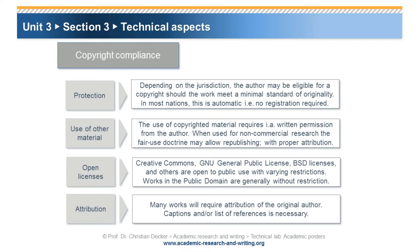It is important to take note of open licenses, such as Creative Commons, GNU general public licenses, BSD licenses, and others, which are open to public use with varying restrictions. You can use these images or other material as they are not copyrighted, but they may be subject to some restrictions like an attribution requirement. Works in the public domain are generally without restriction. Many works will require attribution of the original author; captions and/or a list of references would be necessary.